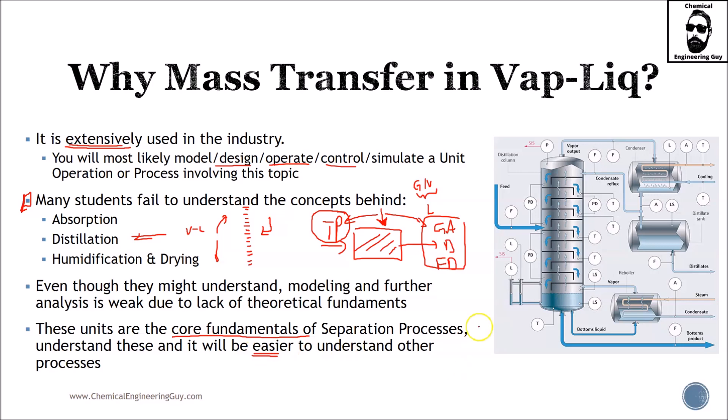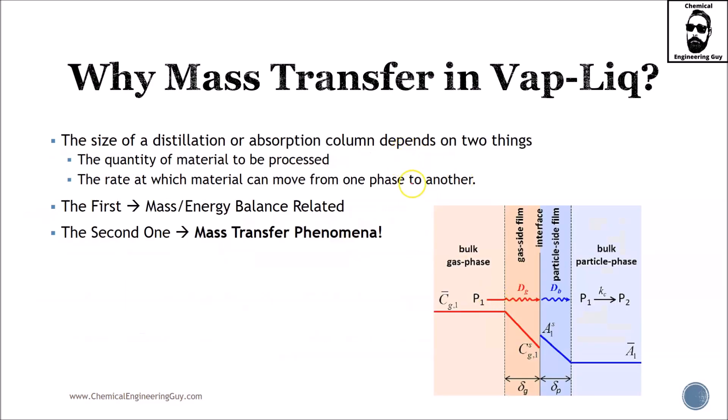Before we continue, mass transfer has two main goals: quantity and rate. The first one is governed by mass and energy balance. If you want to size a distillation column, you know that a greater distillation column means more mass and more energy will be involved.